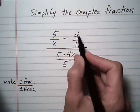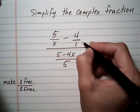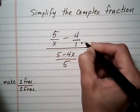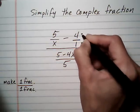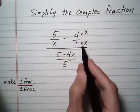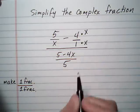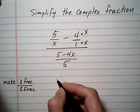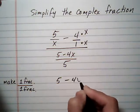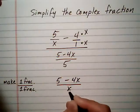So we want to do 5 over x take away 4 over 1. Find a common denominator, which would be x, so we have to multiply the x top and bottom onto the 4 over 1 for it to have the common denominator, and that turns the top into 5 minus 4x over x.